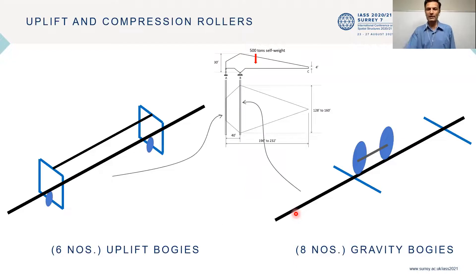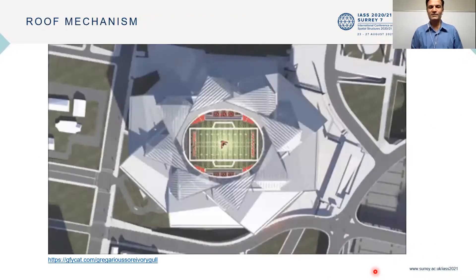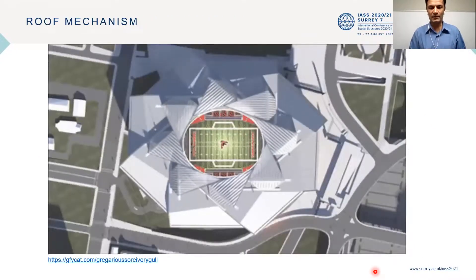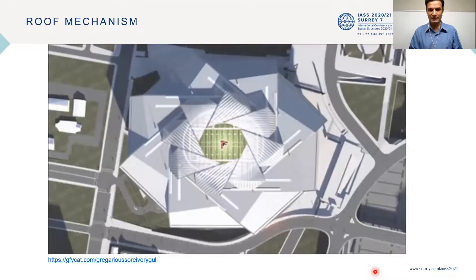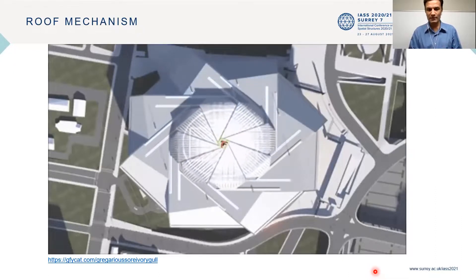Now here's the bogey. There are six uplift bogeys for each petal. And if you look at the wheels, they are placed on the underside of the rail. That's because of the uplift aspect. But on the gravity side, the bogeys are on top of the rails and there are eight in numbers. So this gif is a good image to understand the linear motion, the linear part of the petals.